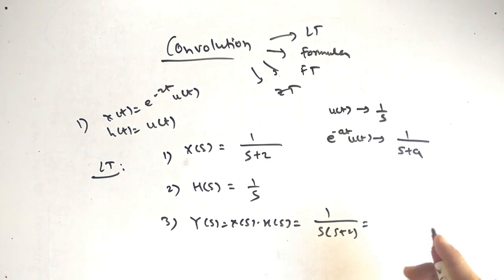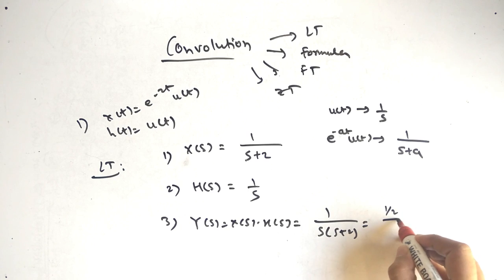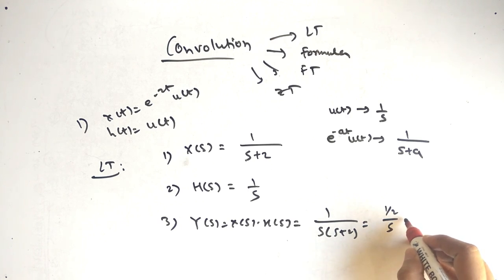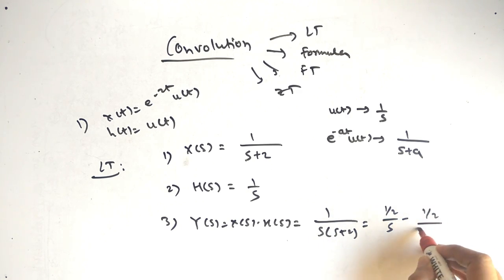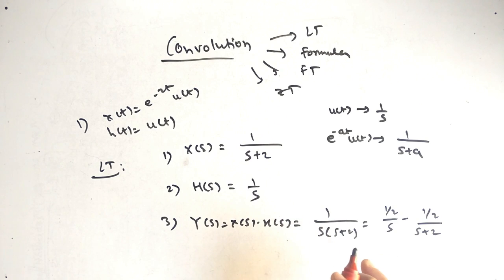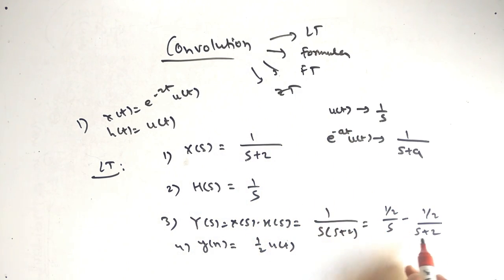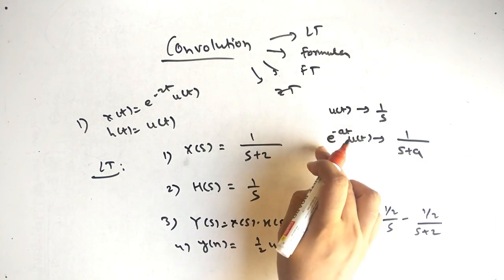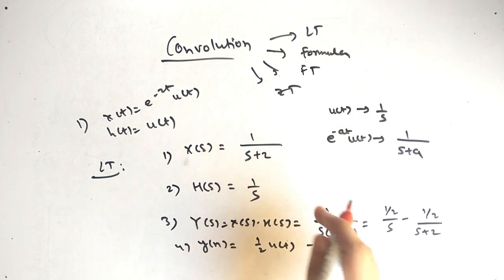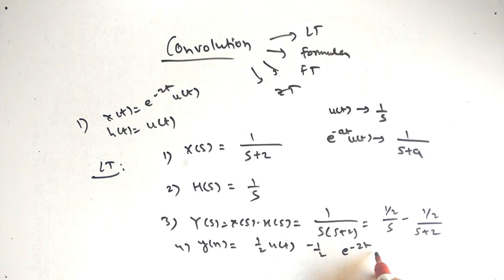After using partial fractions we can split this and get 1 by 2 upon s minus 1 by 2 upon s plus 2. Now taking the inverse Laplace, 1 by s inverse gives u of t, so we get 1 by 2 times u of t minus 1 by 2 times e raised to minus 2t times u of t. This is our answer.